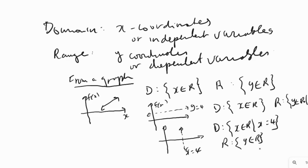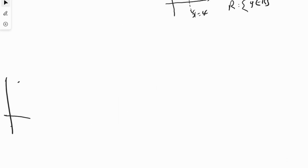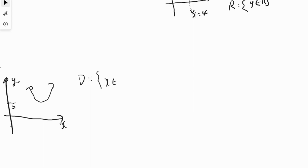For a parabola — let's say the vertex is at 5 — the domain goes forever left and right, so domain is all real numbers. For the range, whenever we have a minimum, y will be every number greater than or equal to that minimum value. So range will be all real numbers such that y is greater than or equal to 5.